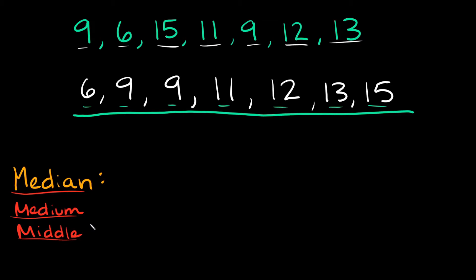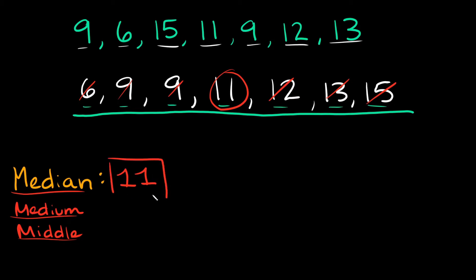The second step is to cross numbers off and work your way toward the middle. Cross off the first one and the last one, then keep going — this one, this one, this one, this one. It looks like 11 is in the middle. So the median is 11.